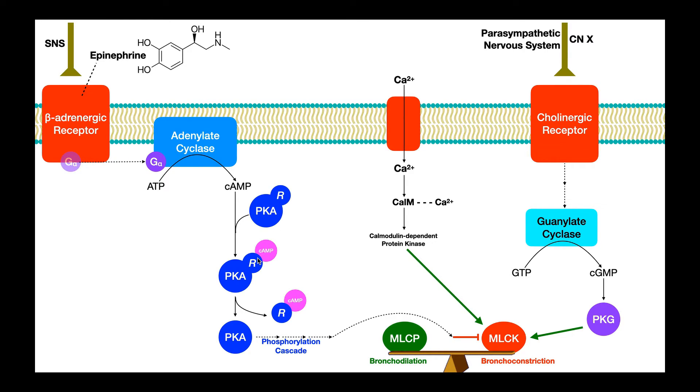You can see cyclic AMP bound, and when it binds to that regulatory subunit, it causes the regulatory subunit to come off of protein kinase A. Now we have a free protein kinase A, and as a kinase it's going to induce a phosphorylation cascade.